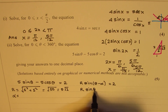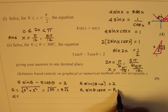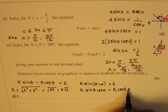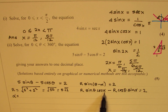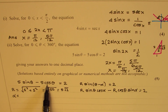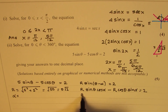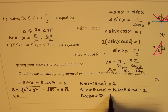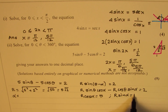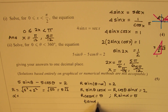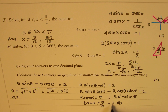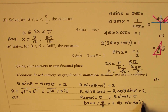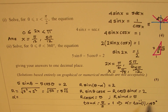Expanding r sin(θ − α) gives r sin θ cos α minus r cos θ sin α. Comparing with the original equation, r cos α equals 5 and r sin α equals 5. Their ratio gives tan α equals 1, so α equals tan⁻¹(1), which is 45 degrees.